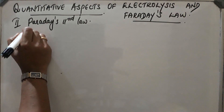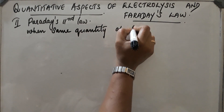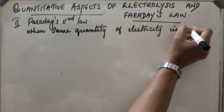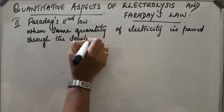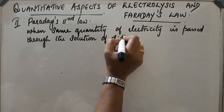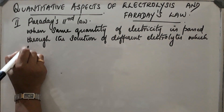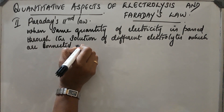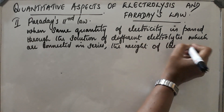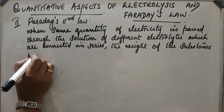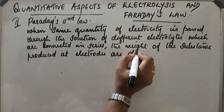It states that when the same quantity of electricity is passed through the solution of different electrolytes which are connected in series, the weight of the substance produced at the electrodes is directly proportional to their equivalent weights.